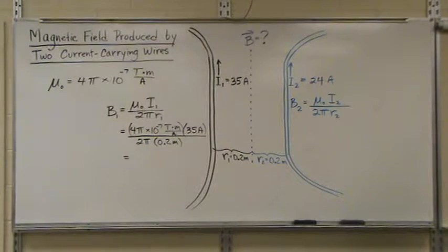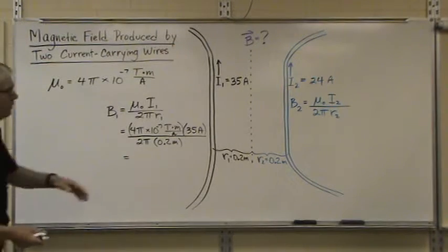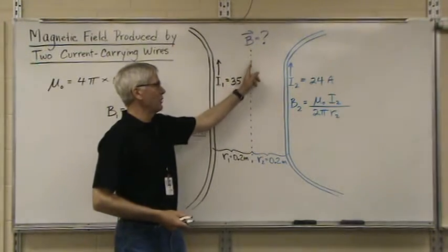We are going to determine the magnetic field produced by two current carrying wires. As you can see we have two wires parallel to each other in one area. The current of both is directed upward. Current 1 is 35 amps. Current 2 is 24 amps. So we want to figure out the magnetic field right in the middle between those two wires.